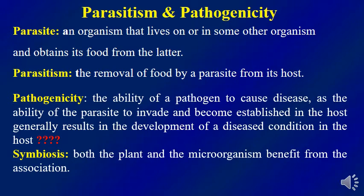What is the difference between parasitism and pathogenicity? A parasite is an organism that lives on or in another organism and obtains its food from the host. The parasite is a living organism that cannot make its own food and depends on a host. If this parasite harms the host, the relationship changes from parasitism to pathogenicity, and this living microorganism develops disease on its host.